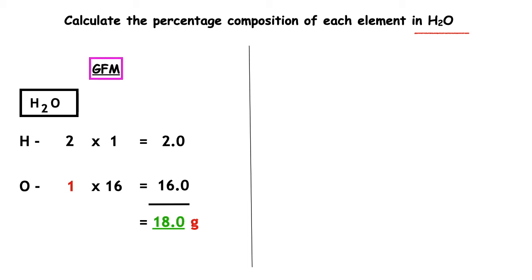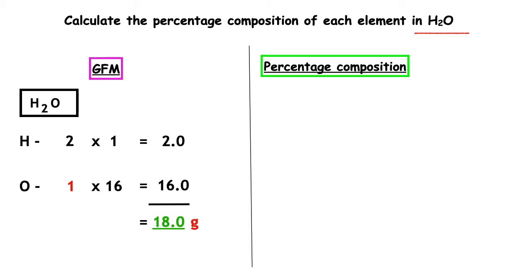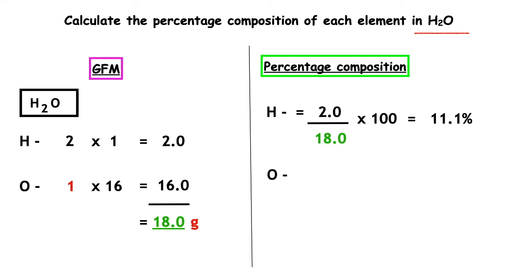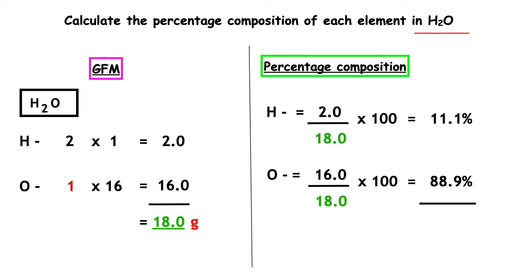To work out the percentage composition of each element, we have to put the mass of that element over the total GFM and multiply it by 100 to put it into a percentage. For hydrogen, the total mass of hydrogen was 2 over the GFM of 18, multiplied by 100, which gives us 11.1%. For oxygen, the mass of oxygen was 16 over 18 times 100, which gives 88.9%. When we add both of those percentages up, 11.1 plus 88.9 equals 100%.